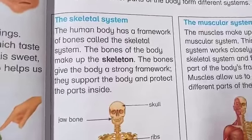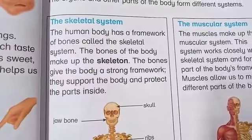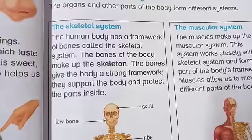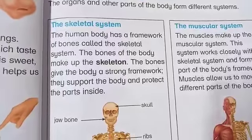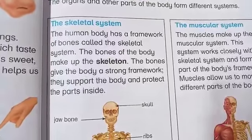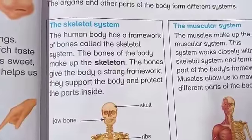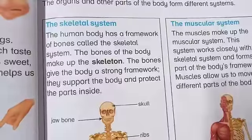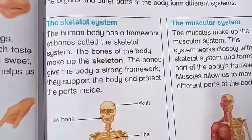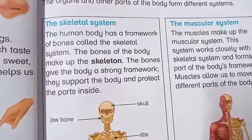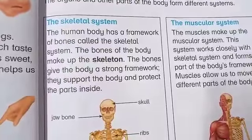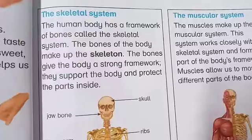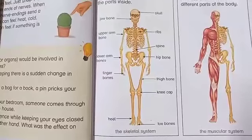Assalamu alaikum students, hope you all are fine. Today we will study about the skeletal system. The skeletal system is made up of all the bones present in our body, and the framework formed by the bones is called a skeleton. The bones or the skeleton give the body a proper shape and also help to support the body and protect the soft and sensitive organs present inside the body.